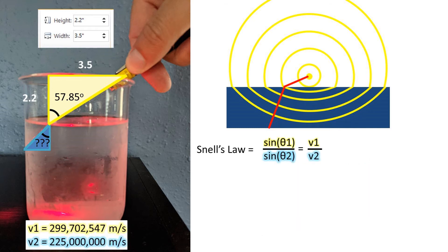This refraction angle can be found by using Snell's Law, which is the sine of the angle from the normal of the surface of the first medium, divided by the sine of the angle from normal of the second medium, is equal to the velocity of light through the first medium, divided by the velocity of light through the second medium.